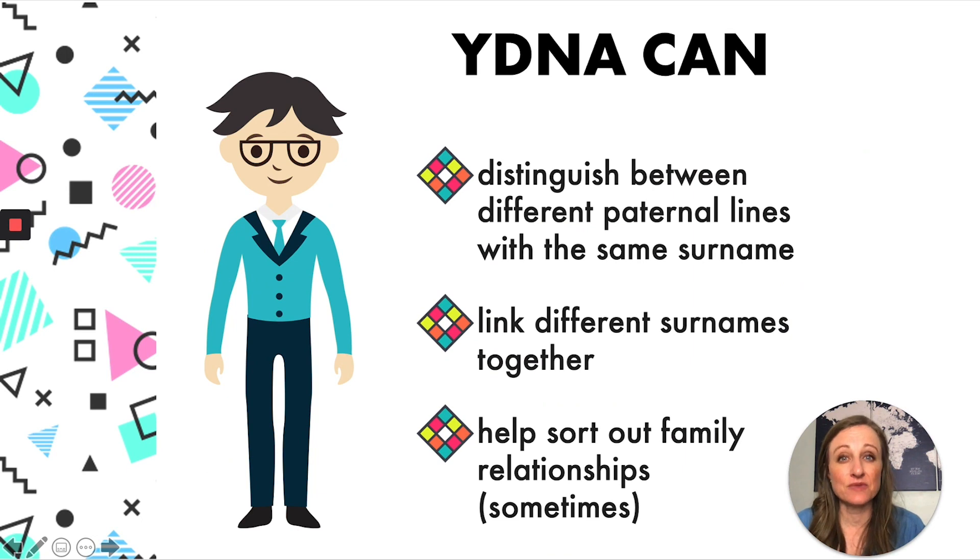Your Y-DNA can do these three things. First of all, it can distinguish between different paternal lines with the same surname. So if you have people in your pedigree chart, maybe you're a Miller or a Smith or a Jones or a Johnson. This Y-DNA can effectively split out your particular group of ancestors from among all of the other people that share your surname.